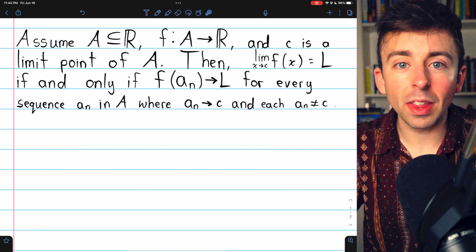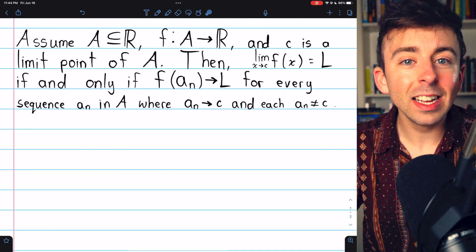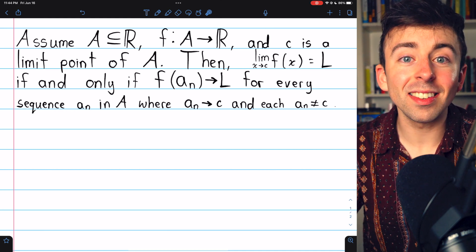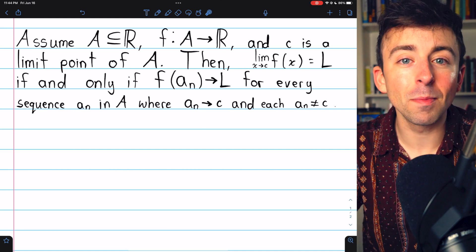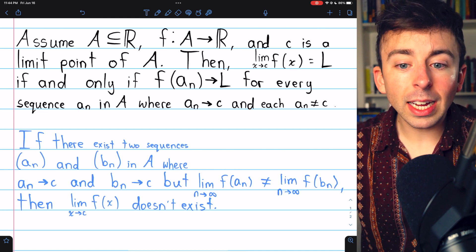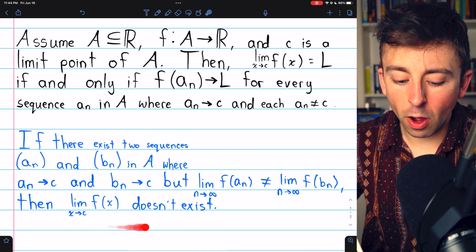The negation of the epsilon-delta definition is kind of a pain to work with, and this sequential criteria can be a lot more practical. The idea is simply to take the contrapositive.